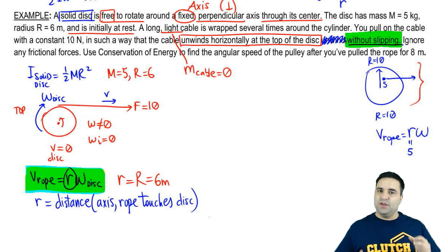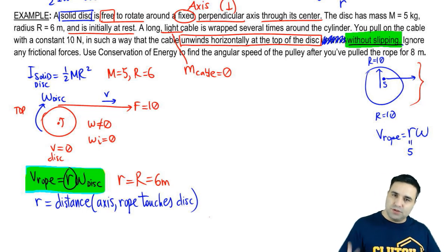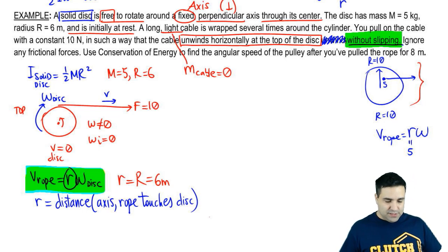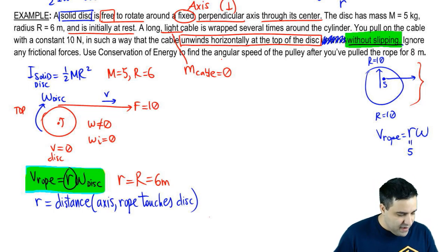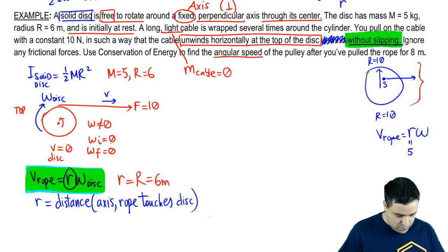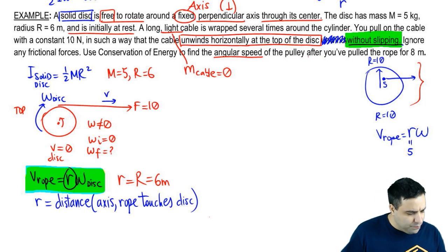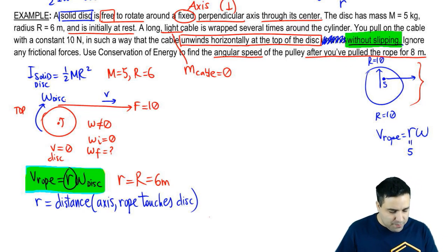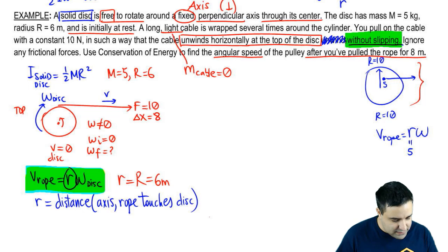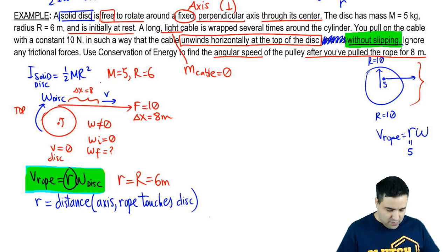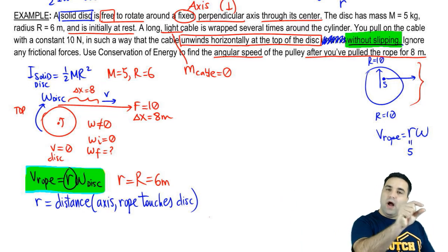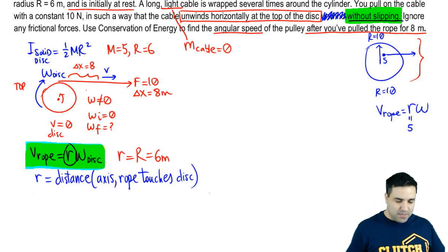Ignore any frictional forces—if it doesn't tell you what friction is, just assume you ignore it. We're going to use conservation of energy to find the angular speed of the pulley, meaning omega final, after you've pulled the rope for 8 meters—so force of 10 N over a distance delta x of 8 meters, until 8 meters of rope unwinds from the disk.